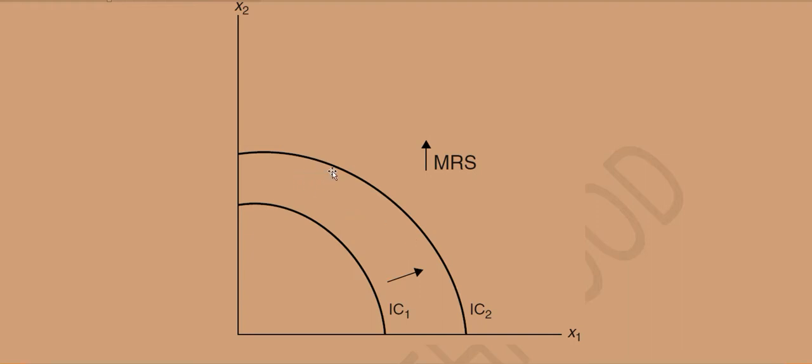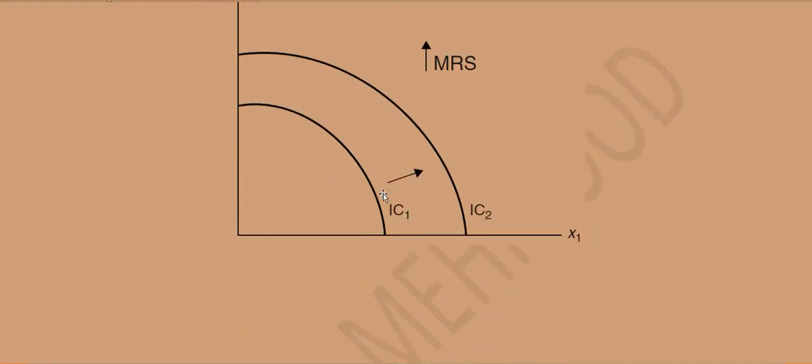So the utility will not increase as we move ahead, as per this arrow. Rather, it will increase if we move from higher indifference curves to the lower indifference curves. The more we get close to origin, the higher will be the utility, because these are bad, these are not goods. So the more we go away from the origin, the lesser will be utility.